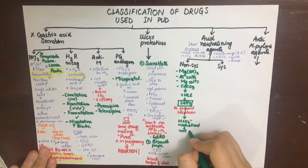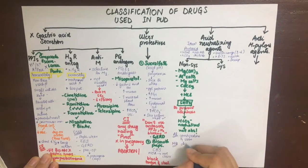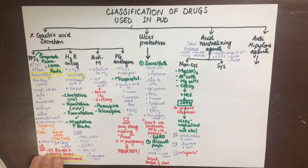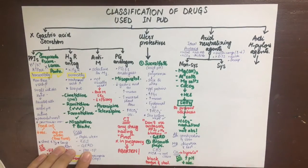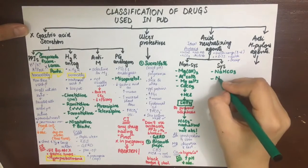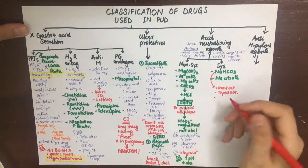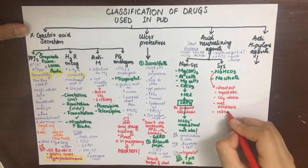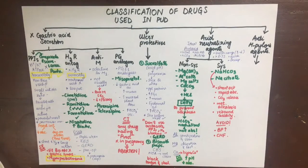Aluminum salts cause constipation and are slow acting, while magnesium salts cause diarrhea and are fast acting. Calcium salts can be absorbed and cause hypercalcemia. The chief drug interaction is due to increased stomach pH, which decreases the absorption of some drugs such as iron, tetracycline (a chelator), and ketoconazole. Systemic acid neutralizing agents include sodium bicarbonate and sodium citrate. Sodium bicarbonate's disadvantages are that it is short acting, highly water soluble and rapidly absorbed causing metabolic alkalosis, releases carbon dioxide, and has rebound acidity. Systemic antacids should be avoided in hypertensives and congestive heart failure patients because they cause sodium retention.